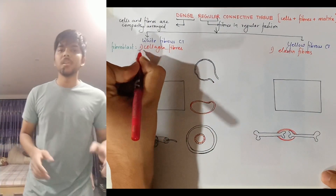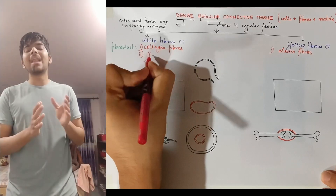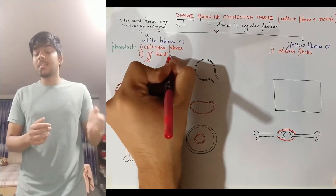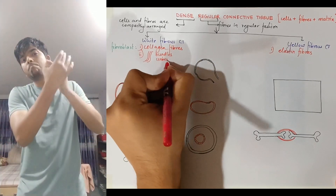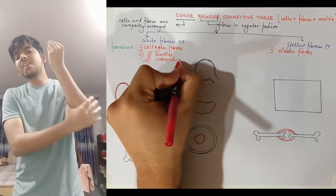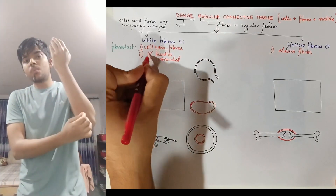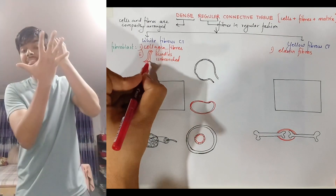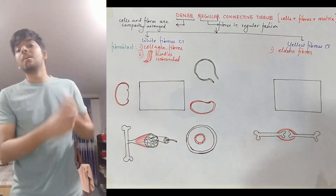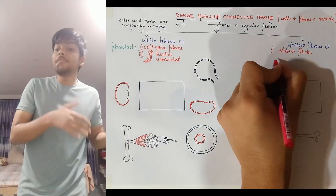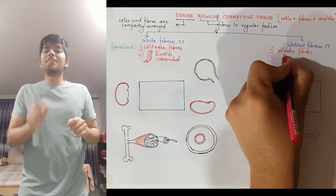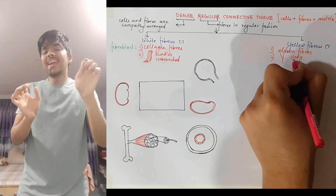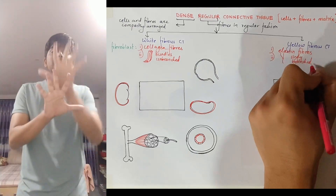Collagen fibers, if we draw the diagram, are found in bundles and are unbranched — one single fiber alongside another fiber, not branched, bundled together. However, in the case of elastin fibers, the fibers are found singly, that is individually, and these fibers are branched.